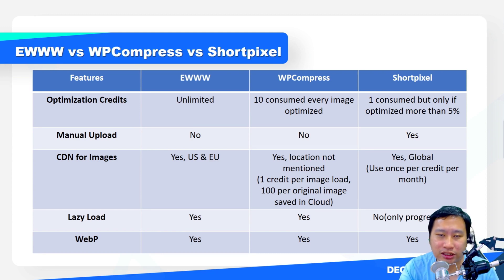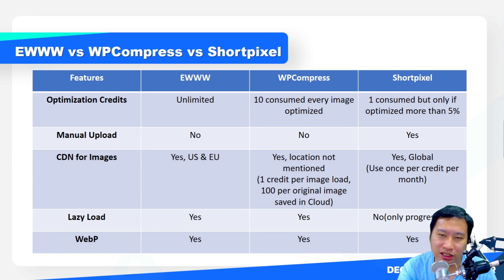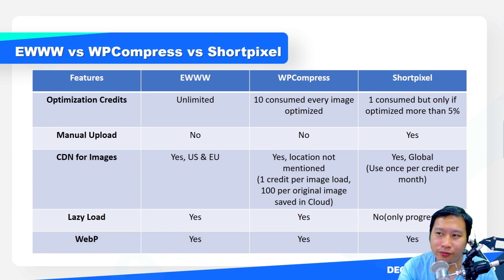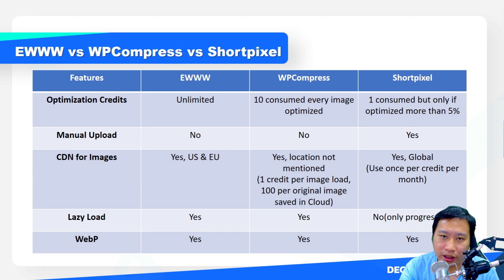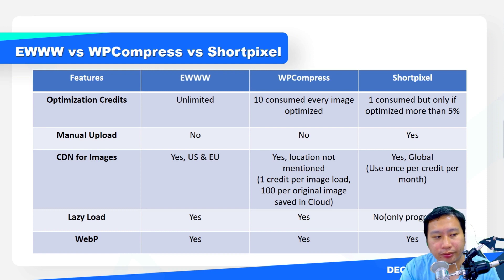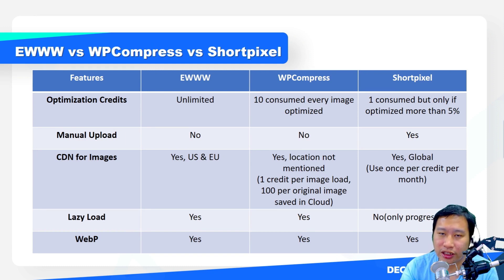For the CDN and adaptive images, Ewww Image Optimizer does have a CDN, but it's only in the US and EU right now. So if you have visitors coming from Asia, South America, or Africa, you may not be able to deliver images fast enough when those visitors come to your website.